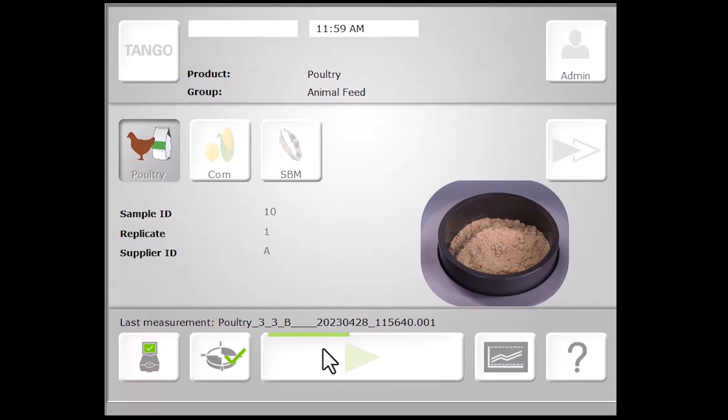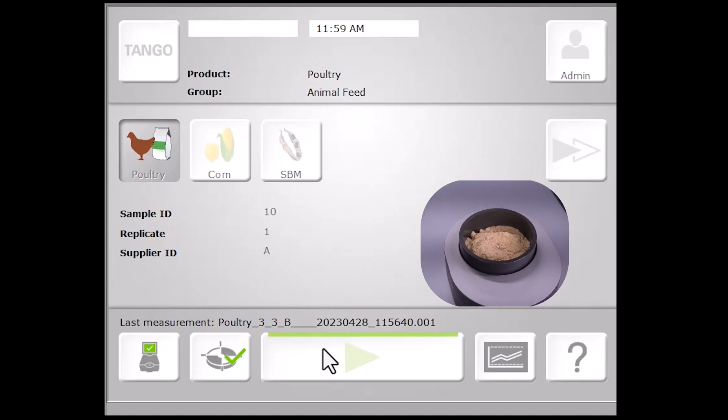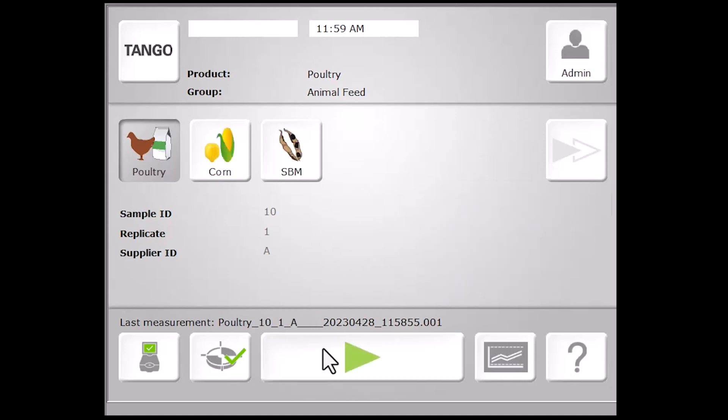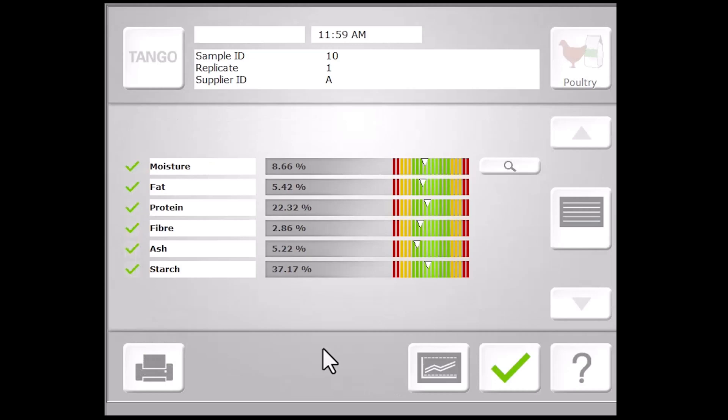While the measurement is being taken, we can visualize its progress with the green progress bar. As you can see, our Tango is quickly and accurately predicting the key components of interest in our poultry feed. And we can see that we're working with a diet that reflects traditional broiler starter diets based on the high protein content.